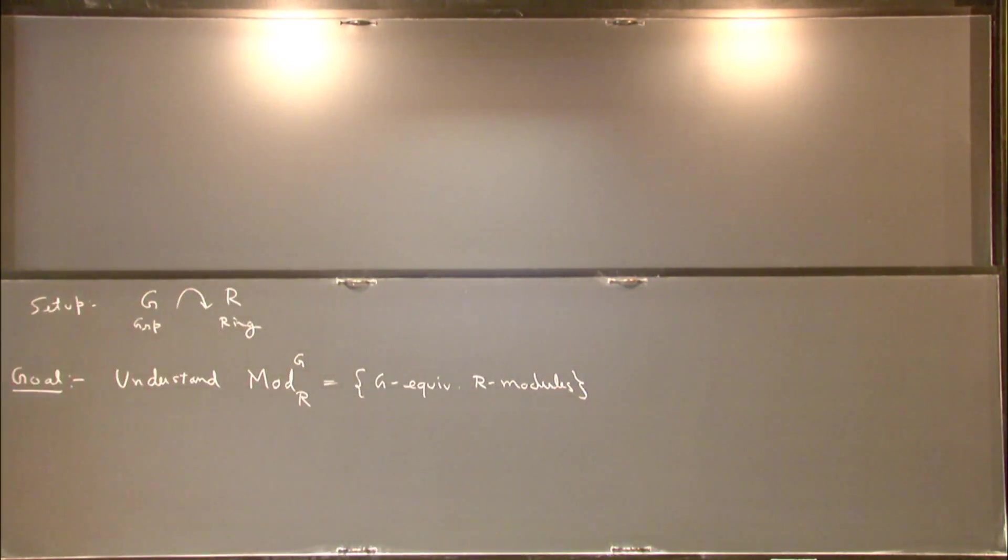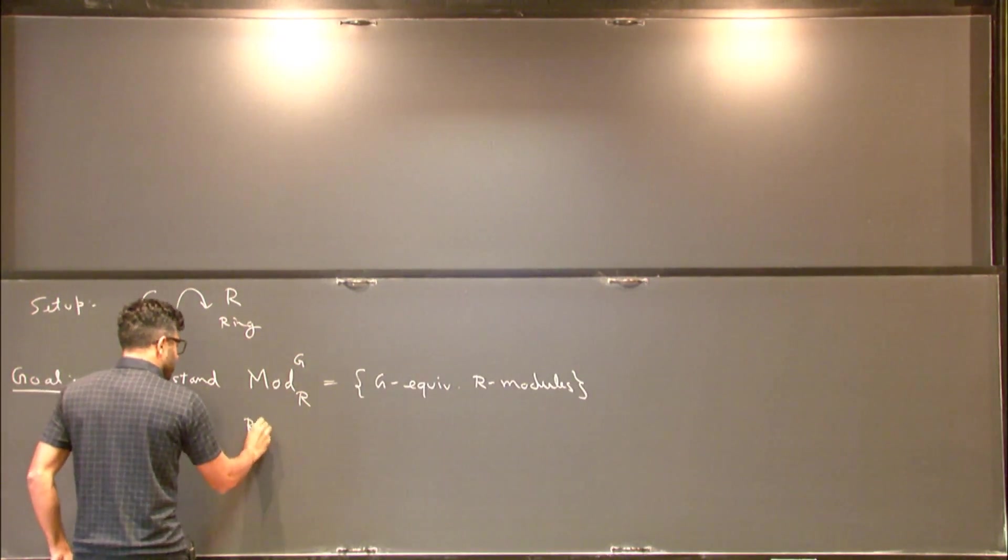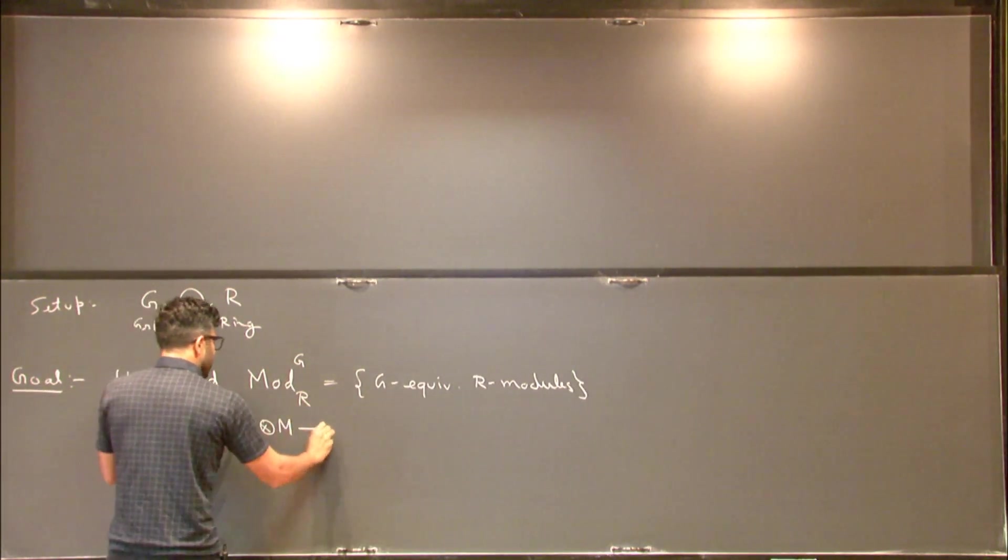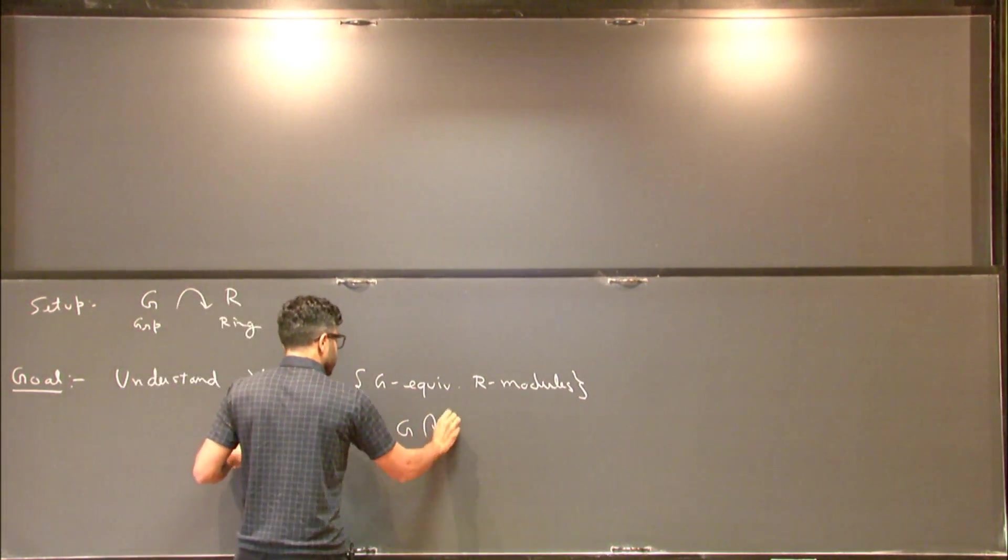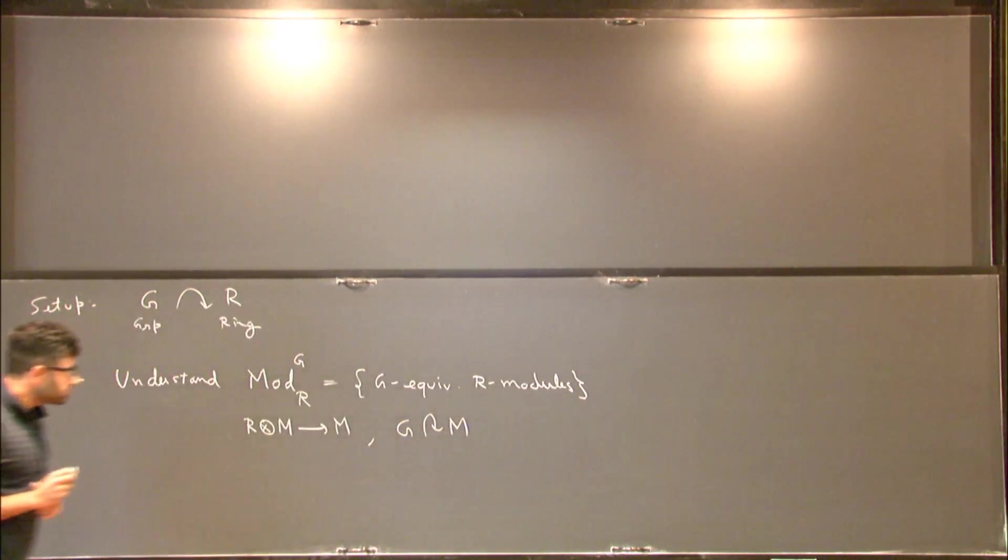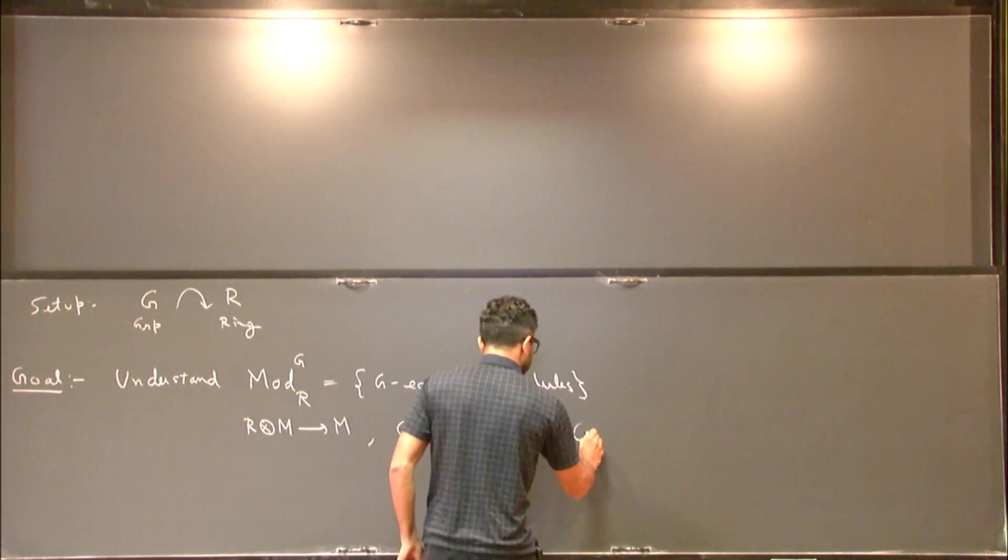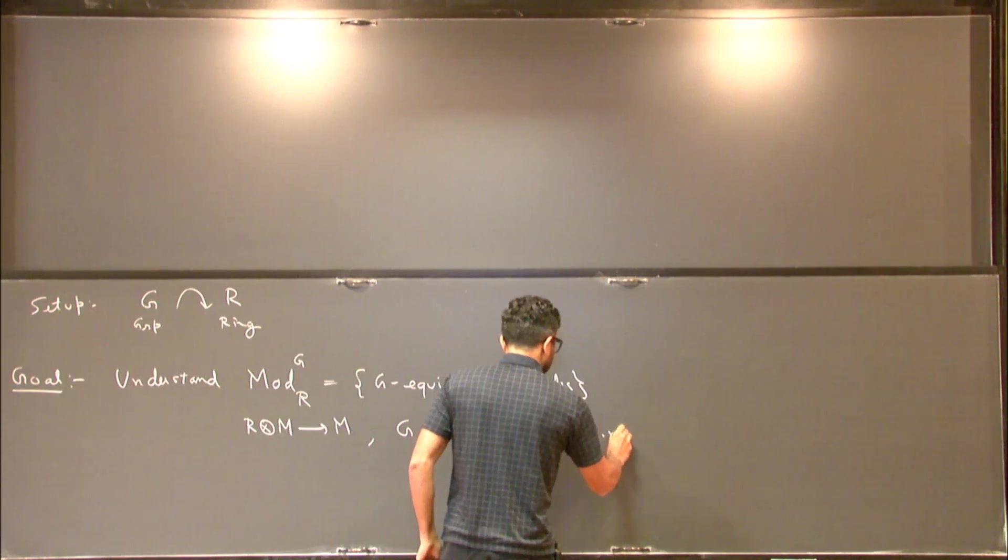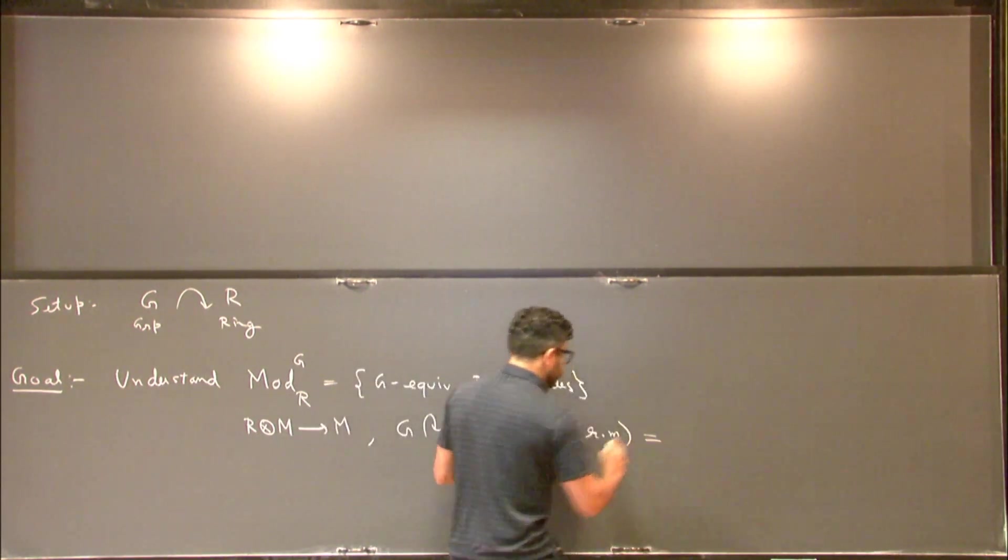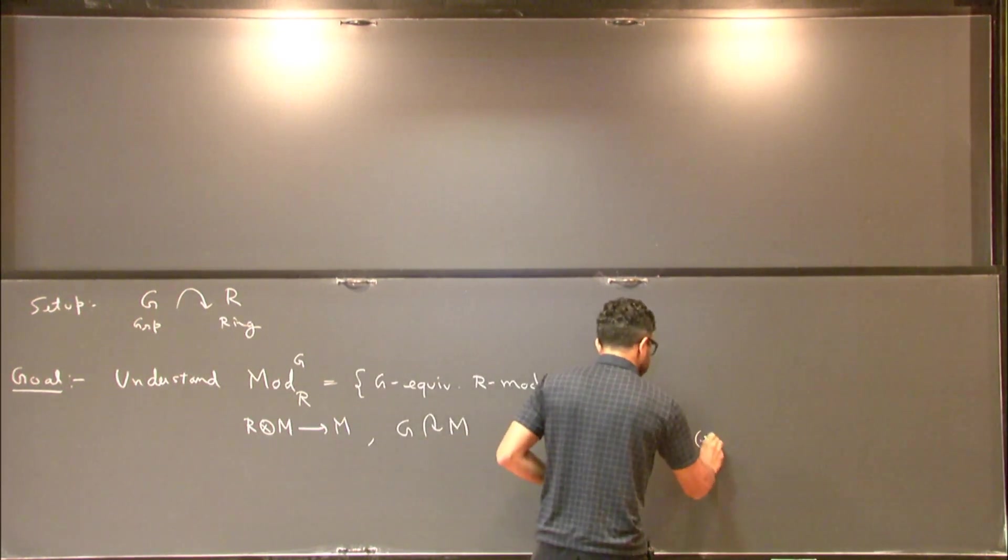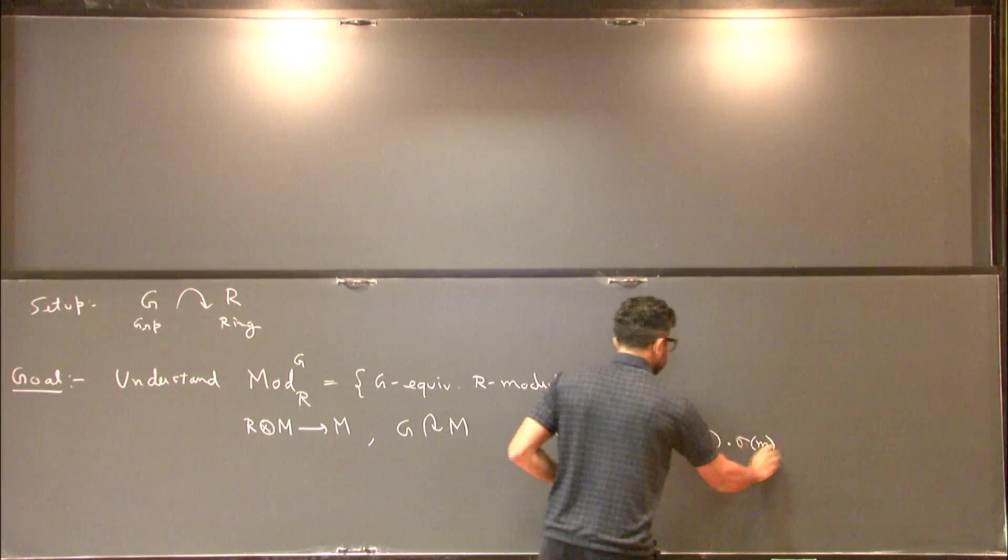So let me explain what this is. What is a G-equivariant R-module? So it's an R-module, so we have a multiplication map and we have an action of G on the module. And we have some condition that is satisfied, the condition, the nature of condition is that if you act on an element of the module and then apply an element of the group, it's the same as first applying the element of the group individually and then multiplying.